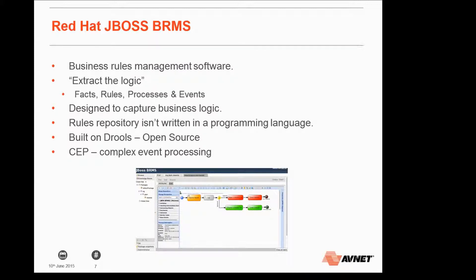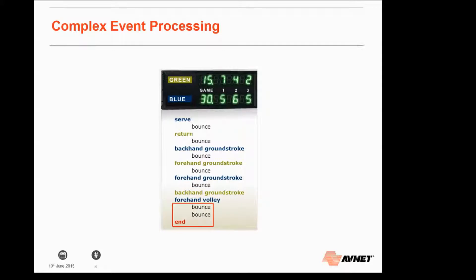For example, a commission-based position within an organization: the rule would be if Joe Bloggs doesn't hit his sales target, he won't get his commission; if he does hit his target, he does get his commission. It's formalizing that sort of rule. BRMS is built on Drools, which is the upstream open source project for JBoss BRMS. It includes complex event processing, which allows you to look at and analyze huge amounts of information over time periods and look for emerging patterns. The whole idea behind BRMS is to get you away from the headache that can accompany a traditional software development life cycle.